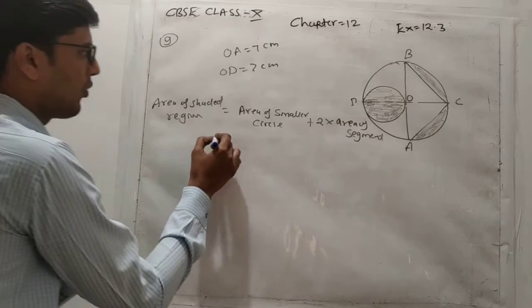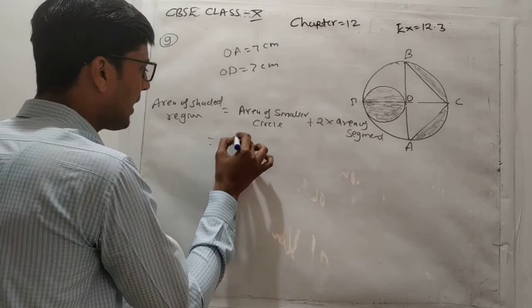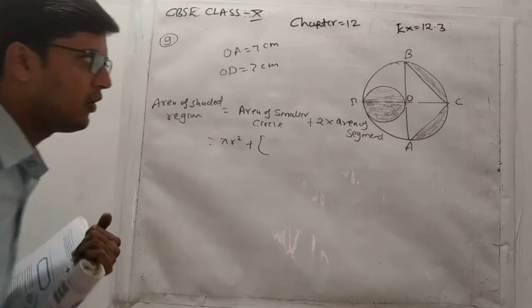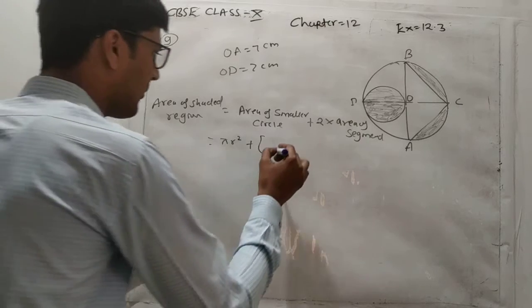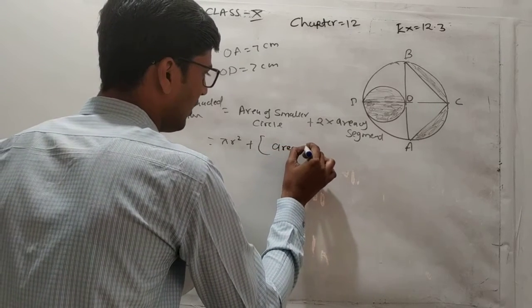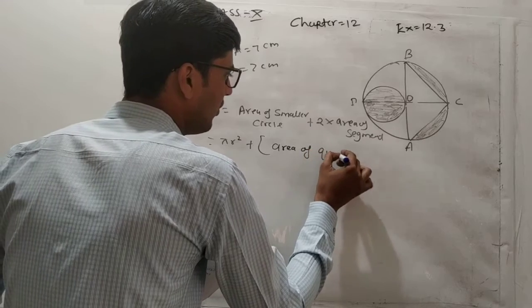Calculate the area of smaller circle - pi r square. Now you can see area of segment, find the area of quadrant.